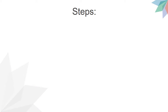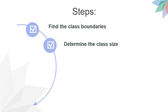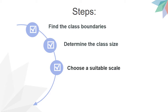The steps to be taken are: First, find the class boundaries — these values will be displayed on the x-axis. Second, determine the class size. From the class size, we can identify whether the histogram is of equal class size or otherwise. Since histograms are drawn on graph paper, a suitable scale must be chosen so that your histogram fits the graph paper and is not too small. And lastly, label both the x-axis and y-axis.